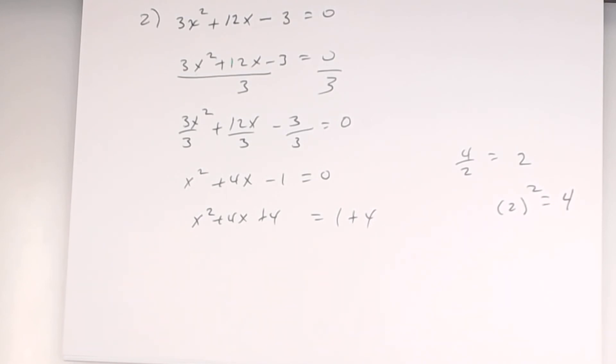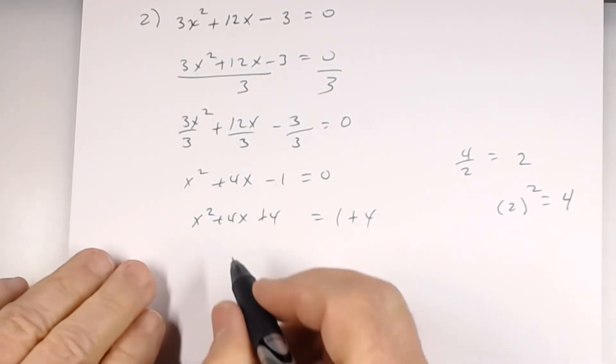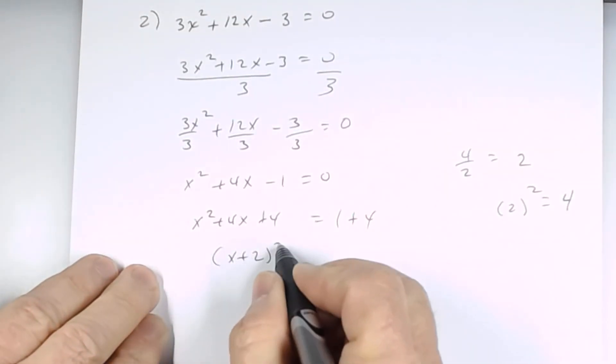If you do this correctly, the left side should be a perfect square binomial, which means I can factor it as a binomial times itself. So, what's that binomial times itself? X plus 2. X plus 2. So, this is x plus 2 squared equal 5.